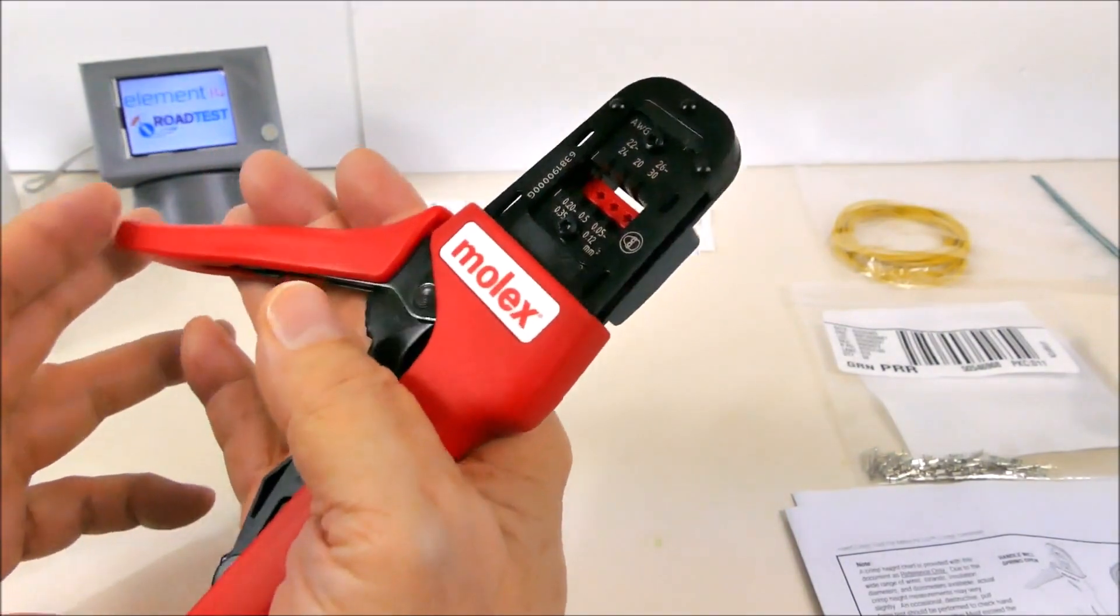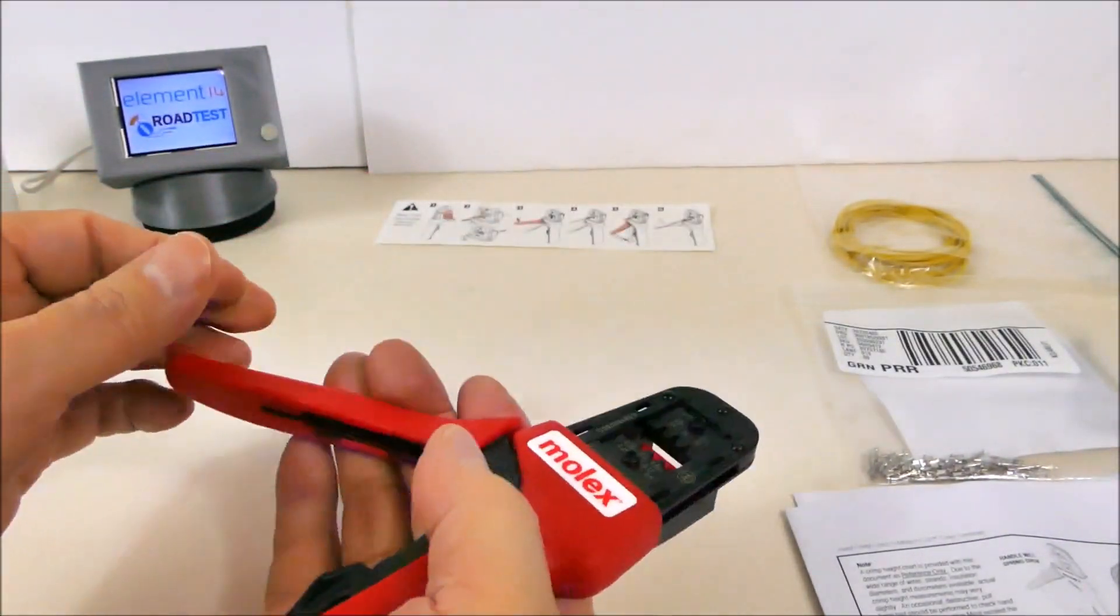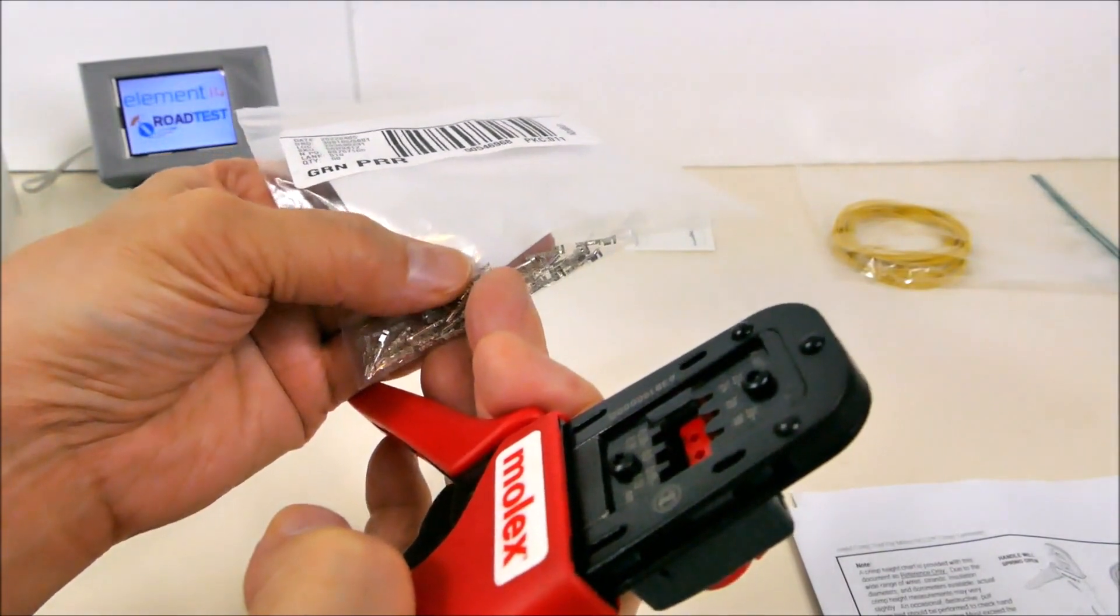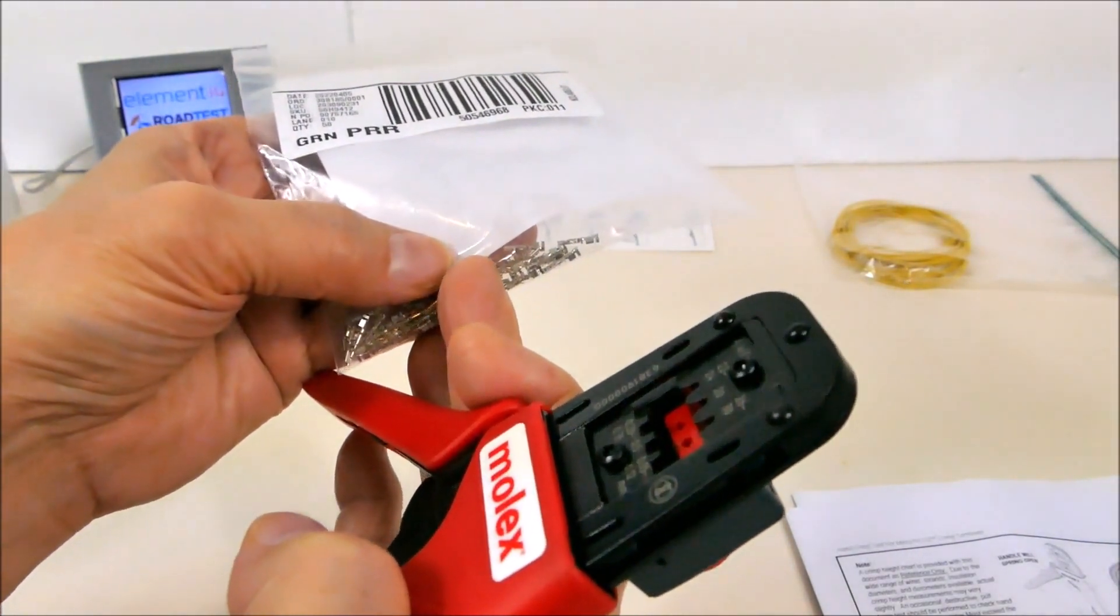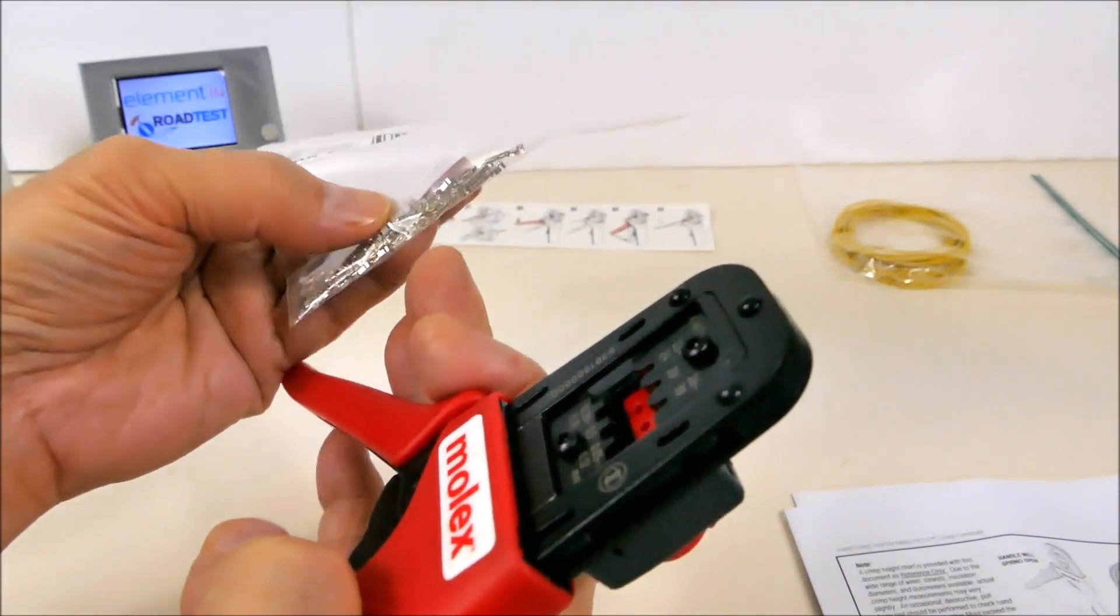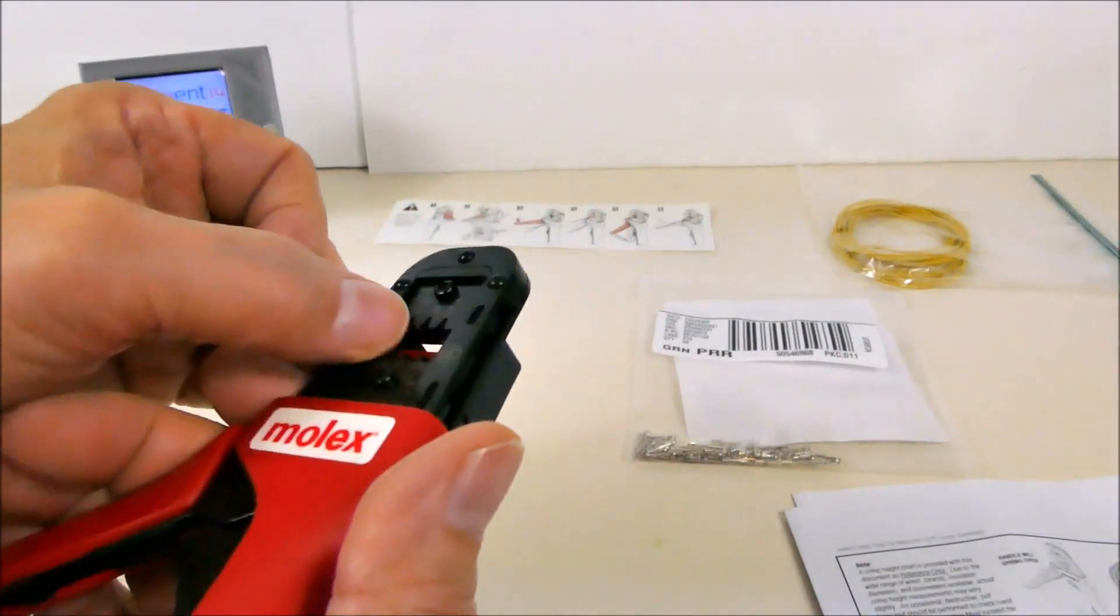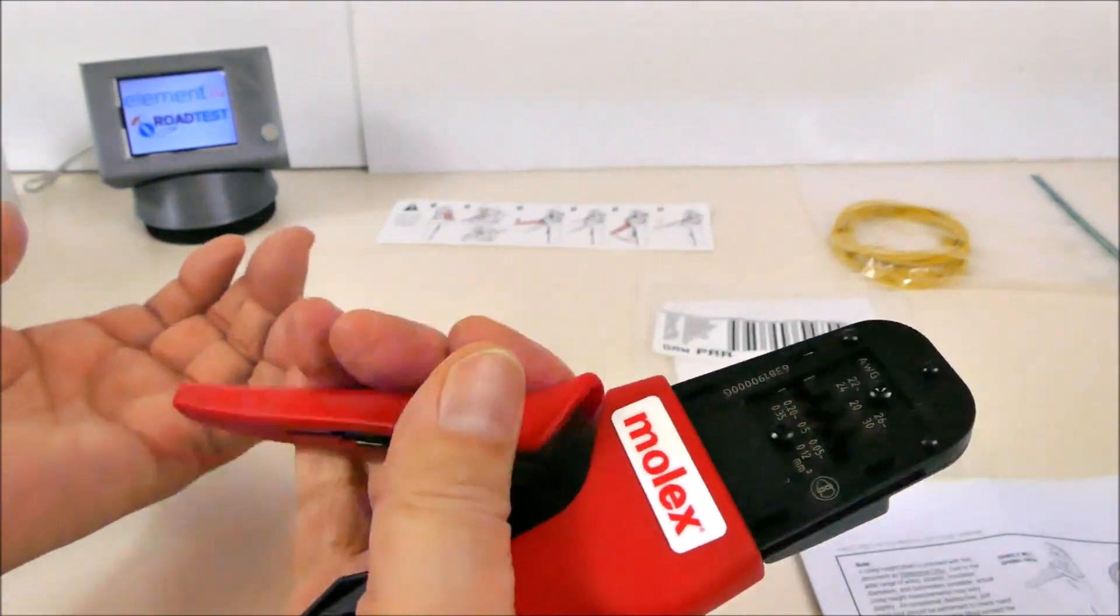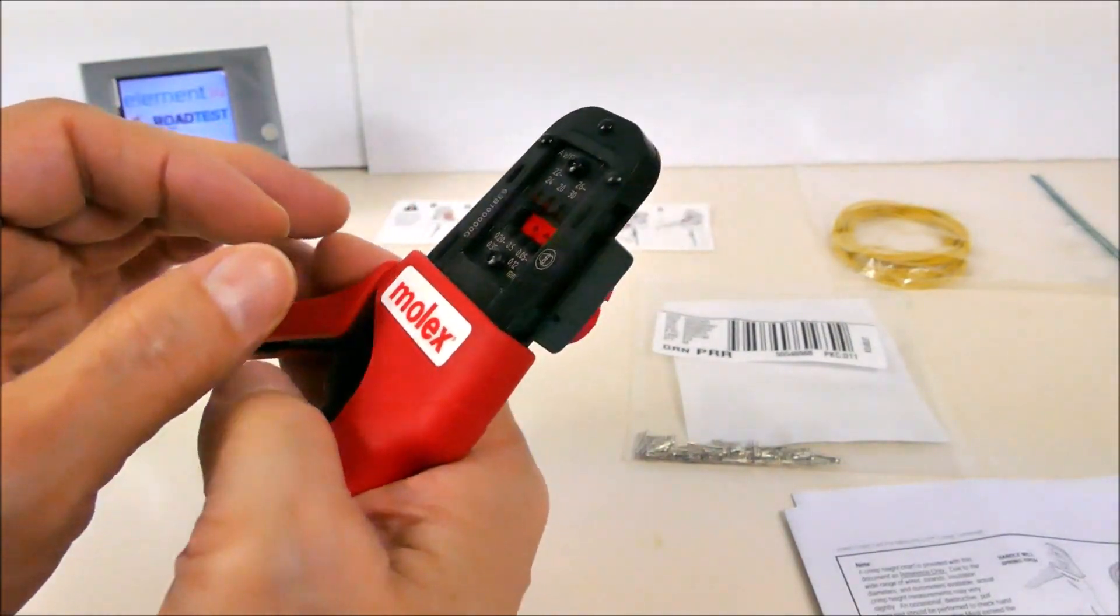One thing we should mention is that these connectors have two sets of wings on them that get crimped onto the wire and the insulation. There's a separate set of wings to crimp the wire and a separate set to crimp the insulation. Those are being crimped at different diameters because the insulation is a different diameter from the wire, and the jaws here handle both at the same time. So it does both crimping onto the wire and crimping onto the insulation in one motion—very efficient type of operation that allows you for precisely crimping both at the same time.